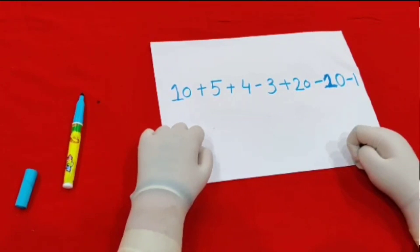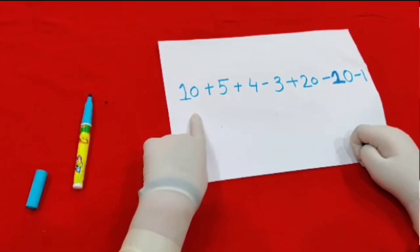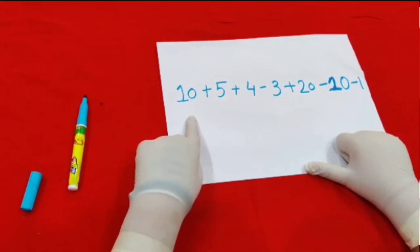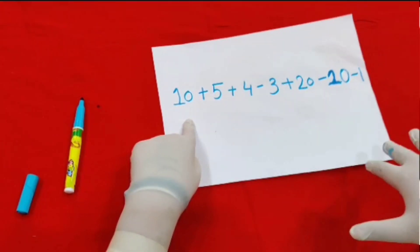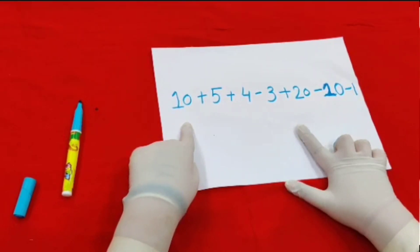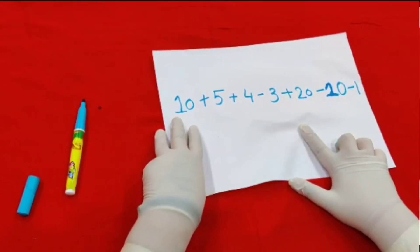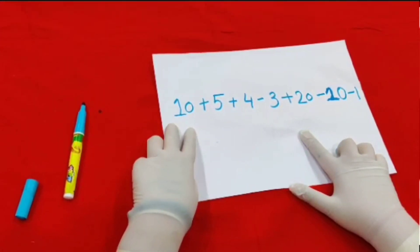So we have to make 10, and plus 5, plus 4, minus 3, plus 20, minus 10.